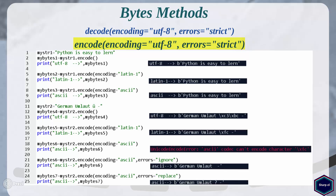Now let's look at the errors argument of encode method. The default value is strict, which tells the Python interpreter to raise an exception if any encoding error occurs. In this example I have a string which contains a non-ASCII character, but I have set the encoding argument to ASCII. The Python interpreter throws an exception that ASCII codec cannot encode the non-ASCII character. To avoid such exceptions, I can set the errors argument to ignore, which tells the Python interpreter to ignore everything it cannot encode and not throw an exception. The output is still a bytes object but the non-ASCII German umlaut is ignored. Similarly, you can set errors to replace, which replaces malformed data with a suitable replacement marker such as a question mark.